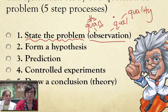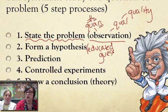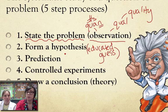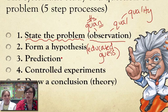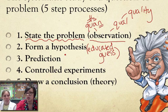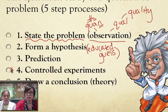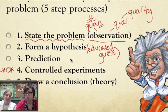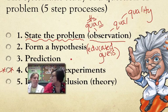Step number two is form a hypothesis. A hypothesis is basically an educated guess — many of you are familiar with that term from middle school science. The third step is a prediction. In most cases people confuse a prediction and a hypothesis, and for our class we're never going to ask you to differentiate between the two — just know that the word prediction is sometimes used. The next step is to perform a controlled experiment, which is probably the most important and trickiest part. We'll spend more time on that later.